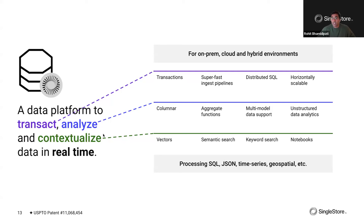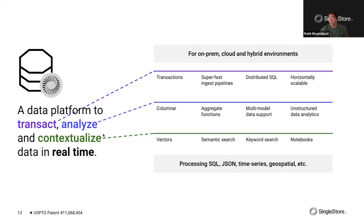SingleStore supports many different data types: JSON, geospatial, time series, regular relational data, vector data, and more — enabling both unstructured and structured data analytics. On vectors, SingleStore has had vector support since 2017 and semantic search since then. This year we released approximate nearest neighbor indexing and the vector data type, making vectors first-class citizens. Combining vector search with keyword search allows you to do hybrid search — giving more contextual results than a simple vector search alone.